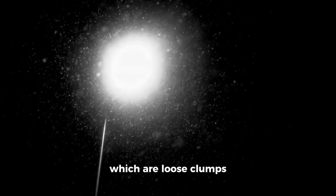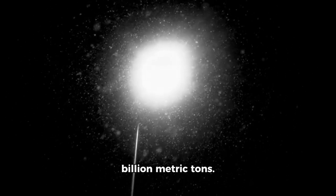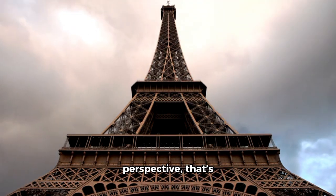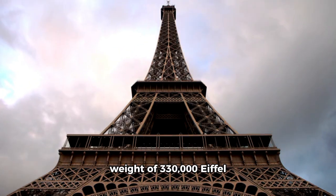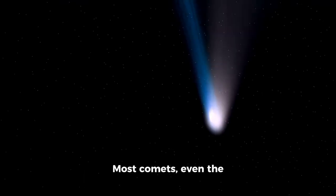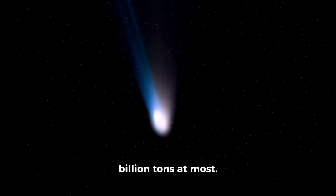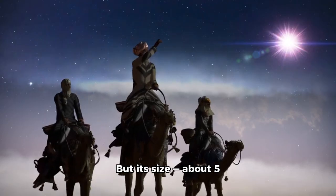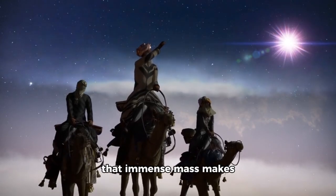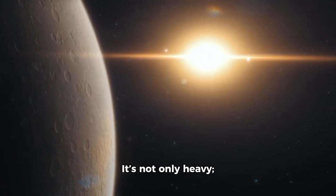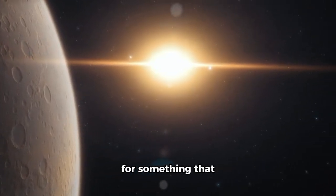Unlike typical comets, which are loose clumps of ice and dust, 3i Atlas was calculated to have a mass of 33 billion metric tons. To put that into perspective, that's roughly equivalent to the weight of 330,000 Eiffel Towers or a small moon. Most comets, even the largest such as Hale-Bopp, weigh only a fraction of that - a few billion tons at most. Its density, approximately 0.5 grams per cubic centimeter, aligns with porous comets, but its size, about 5 kilometers wide, combined with that immense mass makes it an outlier. It's unimaginably heavy for something that behaves like a comet.